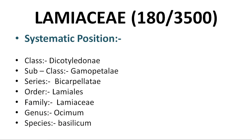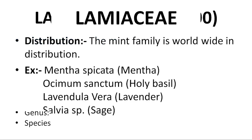The class is Dicotyledoneae, subclass is Gamopetalae, series is Bicarpellate — meaning two carpels are present within the ovary. Next, order Lamiales includes the mint family. The family is Lamiaceae, genus Osimum, species Basilicum — so Ocimum basilicum means Subja or Sweet Basil. The family includes 180 genera and 3,500 species.